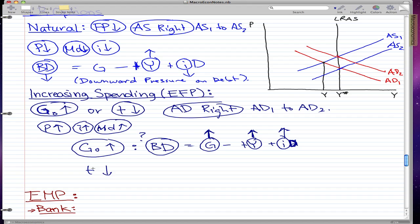Now, how about when tax decreases? When tax decreases, what happens to the budget deficit then? So let's just rewrite our formula. So essentially, what I'm saying is we focus on G and Y.